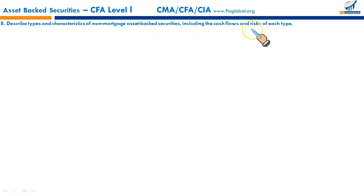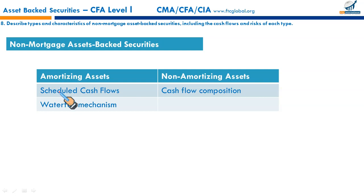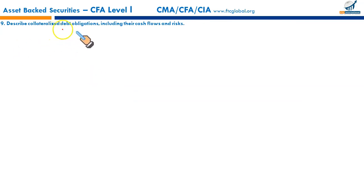Non-mortgage asset-backed securities are broadly classified into amortizing and non-amortizing assets. Amortizing assets — such as auto loans and personal loans — have scheduled monthly cash flows comprising interest and principal payments, distributed via a waterfall mechanism. Non-amortizing assets, such as credit card receivables, do not include regular scheduled principal payments; their cash flows consist of finance charges, interest fees, and principal payments, which are distinct from the amortizing class.